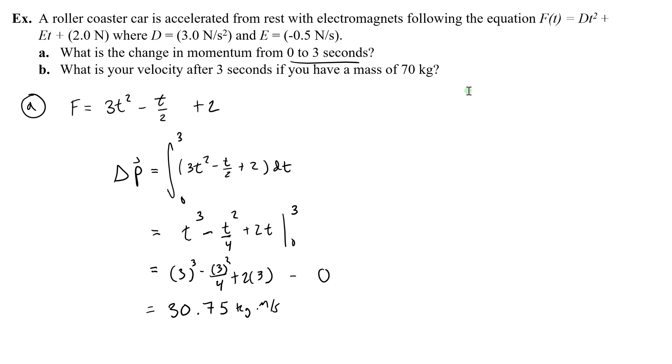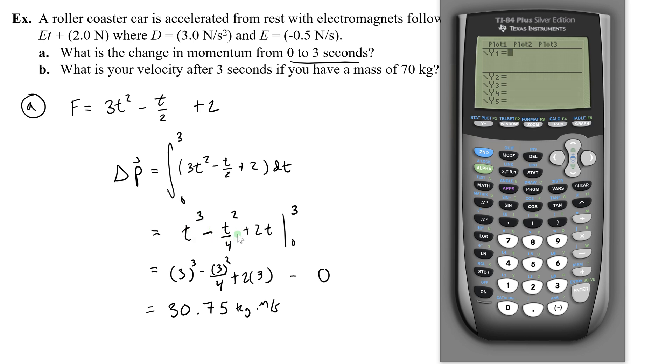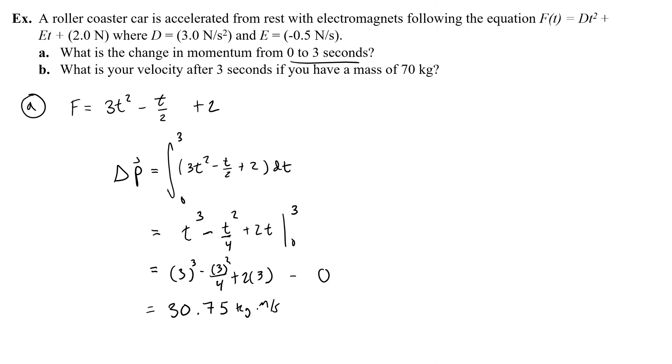Now if you want to verify this, or just to get there quickly in your work, then remember you can graph the original function, so not t cubed minus t squared over 4 plus 2t. Instead you're going to graph 3t squared, which I'll use x for this, 3x squared minus x divided by 2 plus 2. So you can graph the original function, and then use second trace, or the calc features, second calc, and go to number 7, which will integrate. The lower limit you would say is 0, the upper limit is 3, and boom, we just confirmed a change of momentum of 30.75.